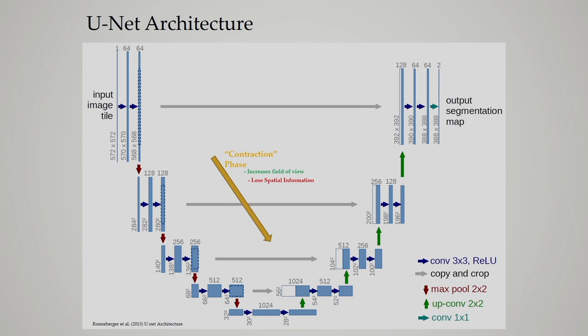In this figure I have shown the first phase: the contraction phase. In the contraction phase we are increasing the field of view and losing spatial information — spatial information is reduced but feature information is increased. In the contraction phase we do repeated convolution, pooling operation, and ReLU activation. The input image size is 572×572.